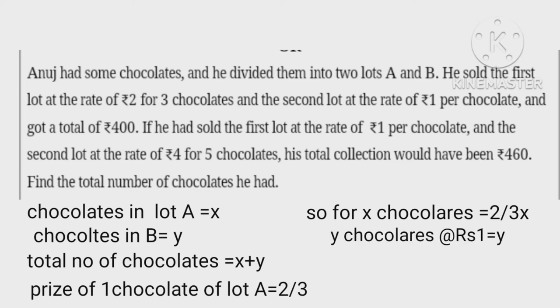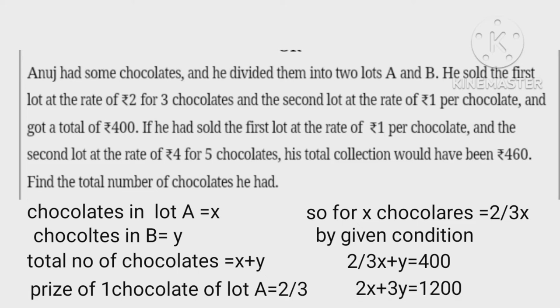And price of y chocolates at the rate of 1 per chocolate equals y. By the given condition, 2 upon 3x plus y equals 400. Therefore 2x plus 3y equals 1200, first equation.